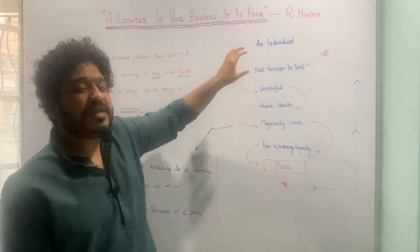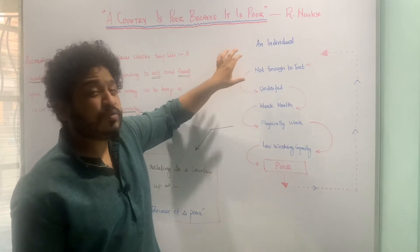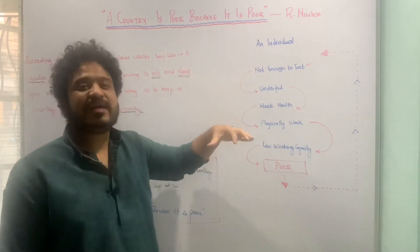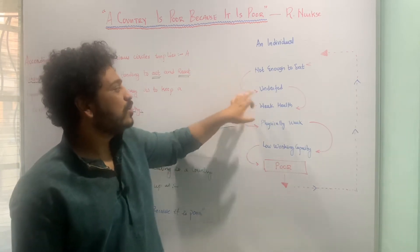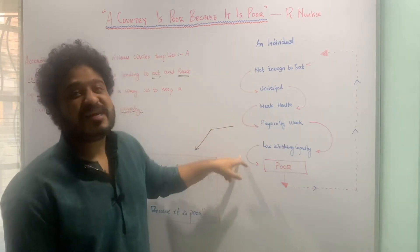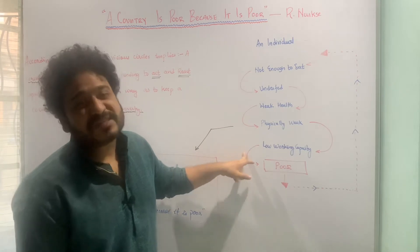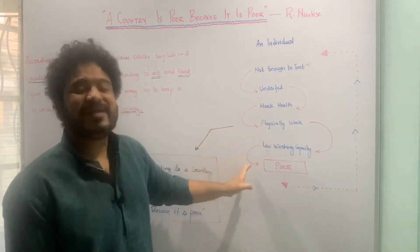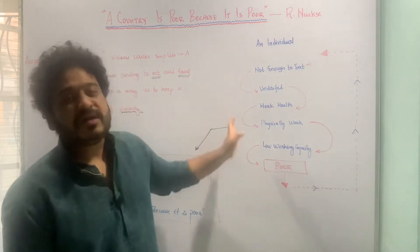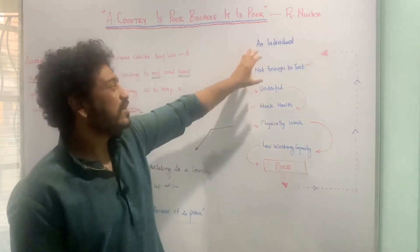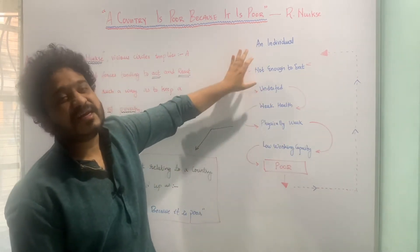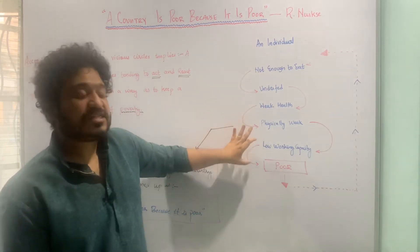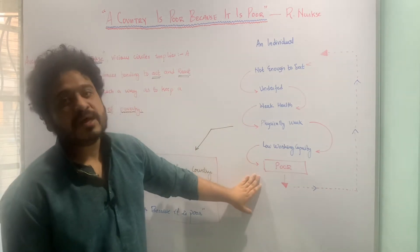Just look at this from an individual's perspective. When you apply this to an economy — where all the individuals in that economy are going through this process — that means that country is going to be obviously poor. You can see how poverty is entrenched in a circular flow when people do not have enough to eat, and that culminates into these different steps, resulting in that individual being poor.